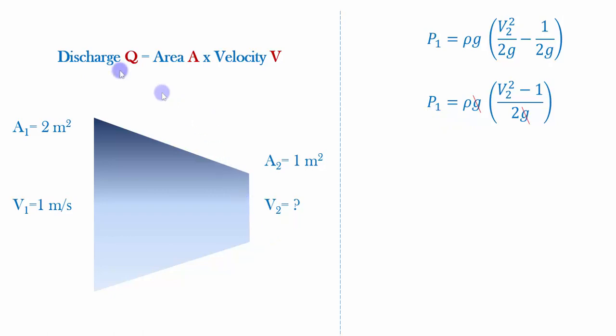For calculating the velocity, we can use continuity equation for incompressible flow. That is q is equal to Av. That is the equation for continuity for incompressible flows in one dimension.